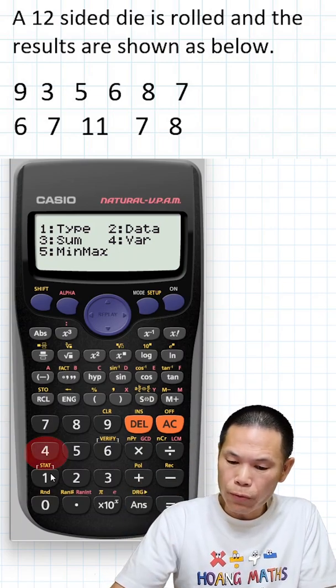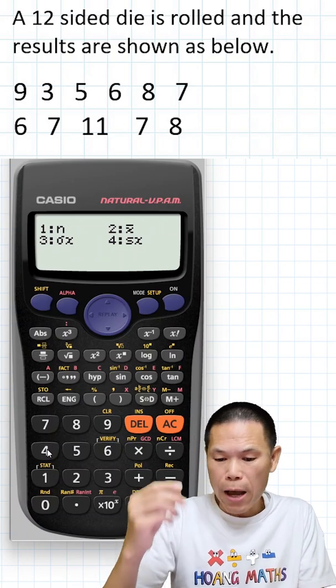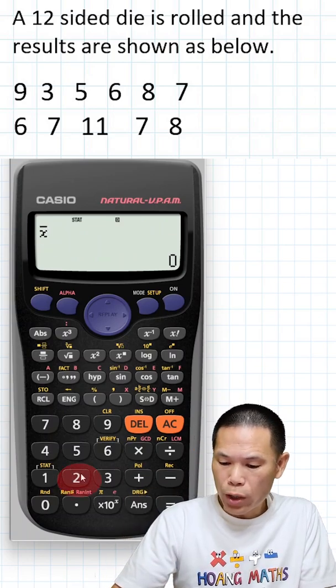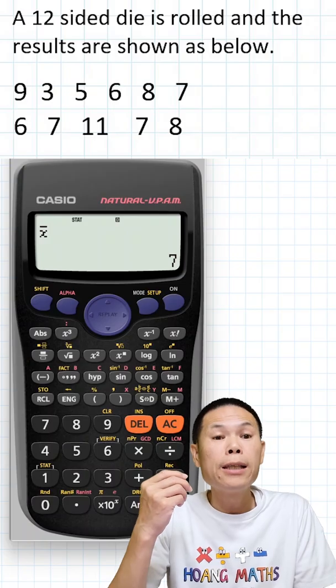To find the mean (x bar), select option two and don't forget to press equal. The result is seven.